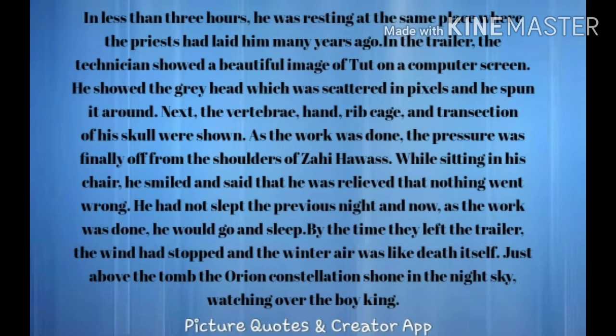Just above the tomb, the Orion constellation shone in the night sky, watching over the boy. This is a documentary about the life and the mysteries behind the death of Tut, a very young king. Unfortunately, he died at a very young age. He was the last ruler of the powerful pharaoh dynasty. But still, they are searching for what exactly happened to him. You can find articles and videos related to this excavation on the internet. If you are interested, you can go through them.